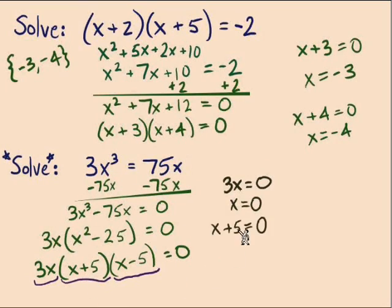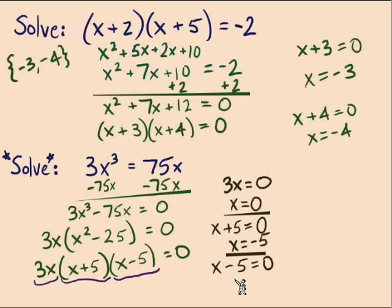Second part: x + 5 = 0 leads us to our second solution x = -5. The third part: x - 5 = 0, add 5 to both sides, leads us to our third solution x = 5. This solution set we actually have three answers: x equals 0, 5, and -5.